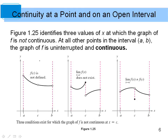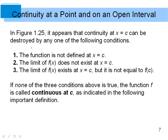Three figures show ways a graph can fail to be continuous. The first is a hole in the graph where f(c) is not defined — there's an open circle. The second is a jump or break where f(c) exists but the limit doesn't exist because we're approaching from two different sides. The third is where f(c) exists but the limit is not equal to f(c), so there's still a break.